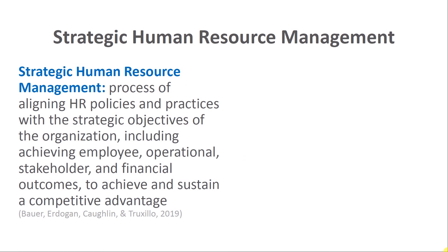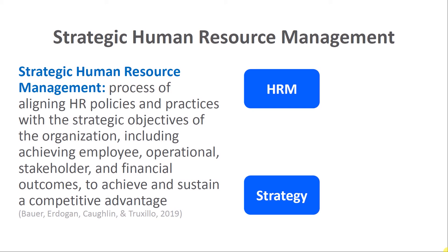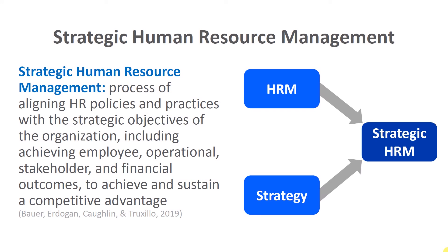This leads us to what we call strategic human resource management, which refers to the process of aligning your human resource policies, practices, and systems with the strategic objectives of the organization — including achieving employee, operational stakeholder, and financial outcomes — in order to achieve and sustain a competitive advantage. You can think of strategic human resource management as the confluence of human resource management and strategy.